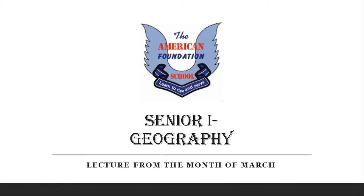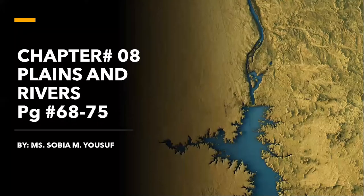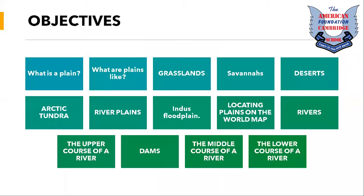Welcome. Today we are going to study geography — it's the lecture from the month of March. We are going to study chapter number eight, which is Plains and Rivers, from page 68 to 75 of your textbook. The topics we will study today are: what is a plain, types of plains like grasslands, savannas, deserts, Arctic tundra, river plains, and flood plains, locating plains on the world map, and the upper, middle, and lower course of the river.